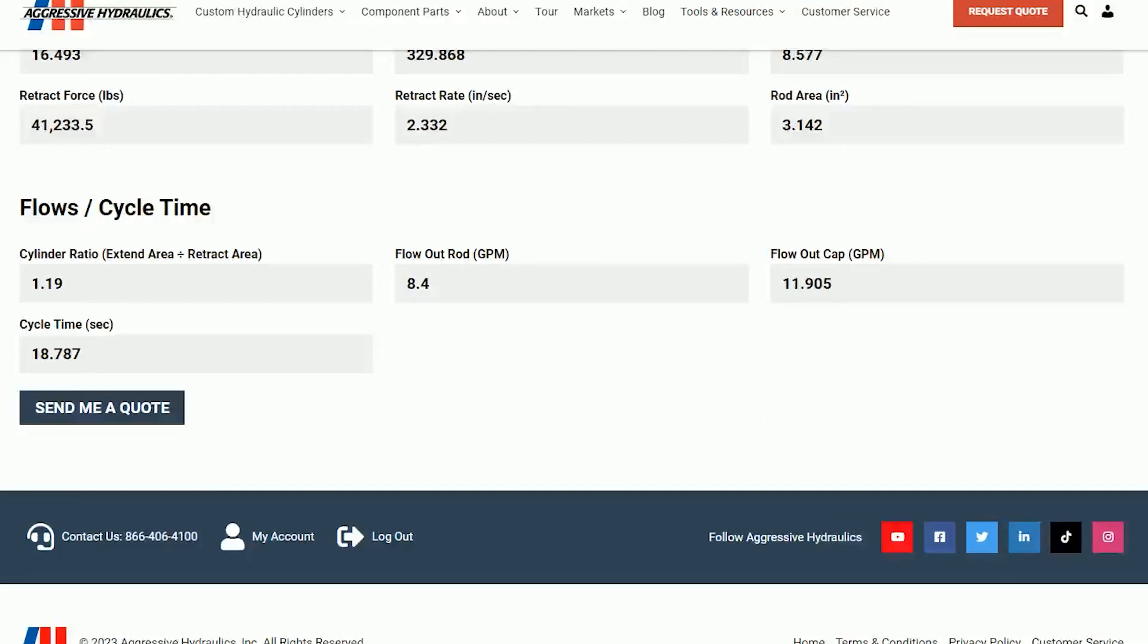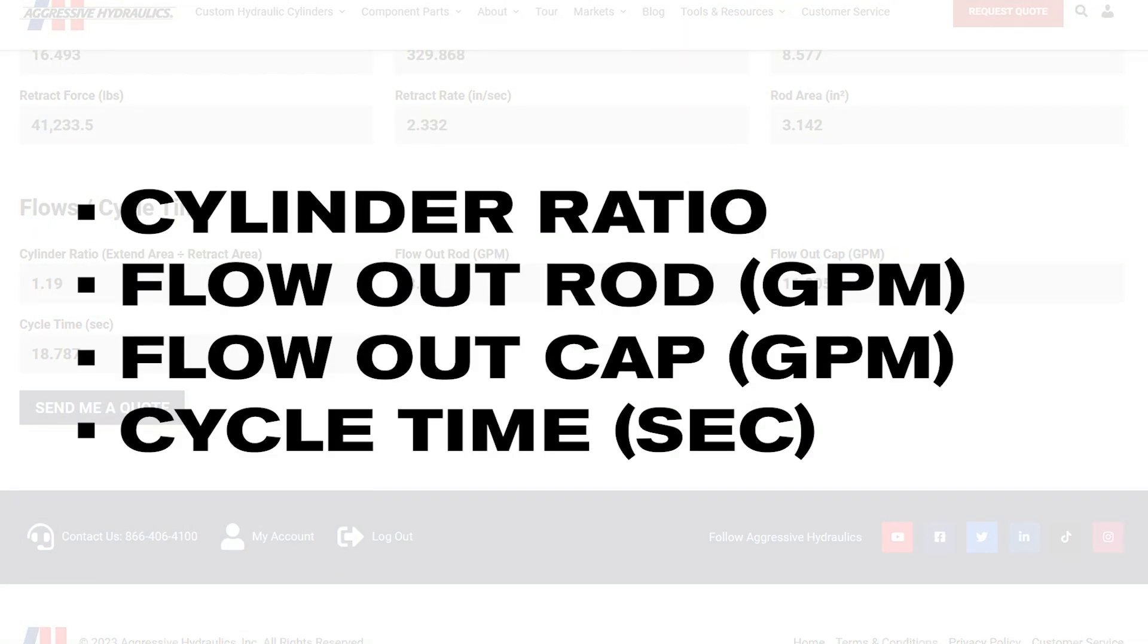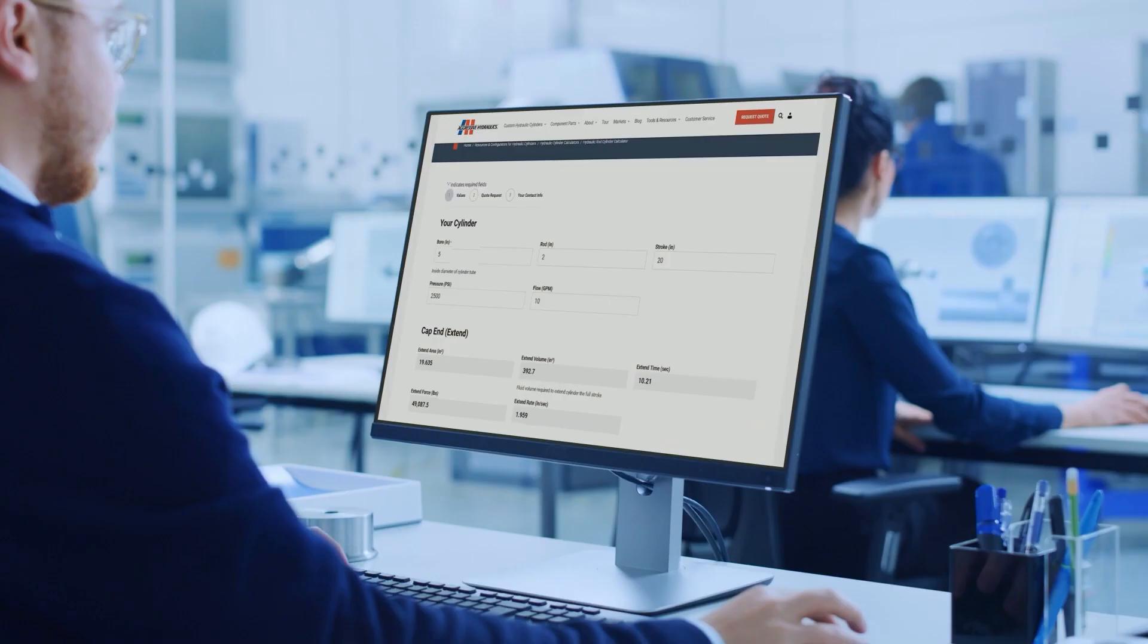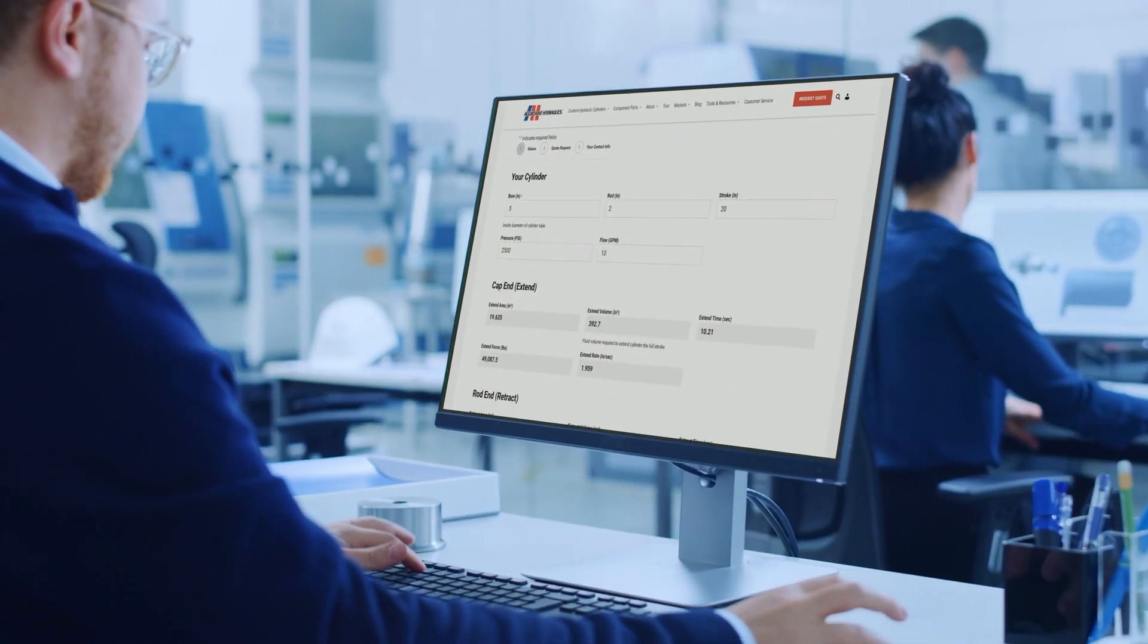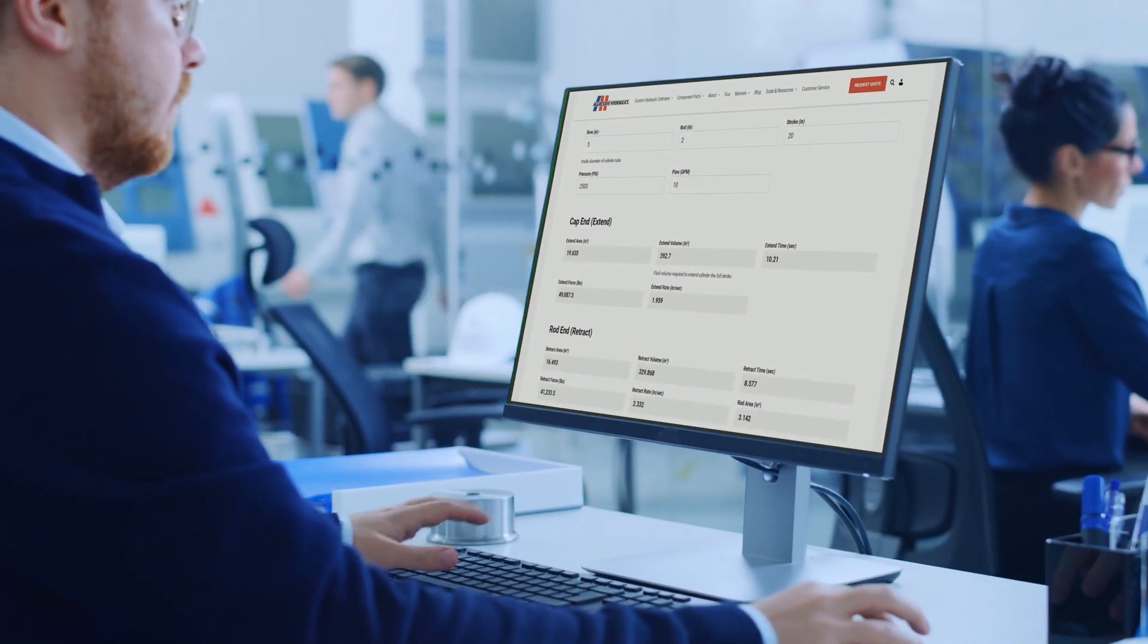For flows and cycle time, the form calculates the cylinder ratio, flow out values from rod and cap ends, and cycle time. Now, let's put these formulas into action using our user-friendly online form.